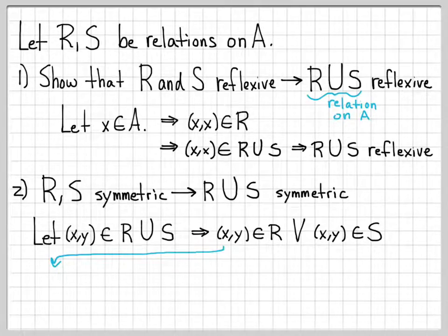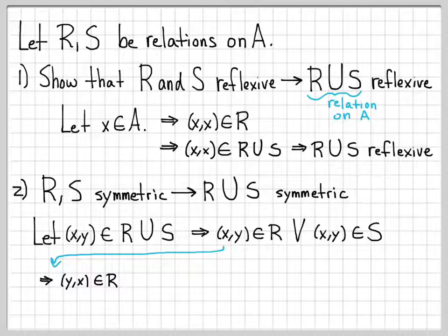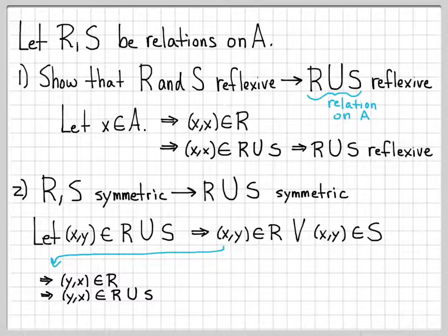Let's look at the case where (x, y) is in R. Since R is symmetric, (x, y) being in R implies (y, x) is in R — that's what it means to be symmetric, you can flip the coordinates and still be in the set. So (y, x) is in R, which means (y, x) is also in R union S. We started with an arbitrary element (x, y) in R union S and showed (y, x) is in R union S, so by definition R union S is symmetric.